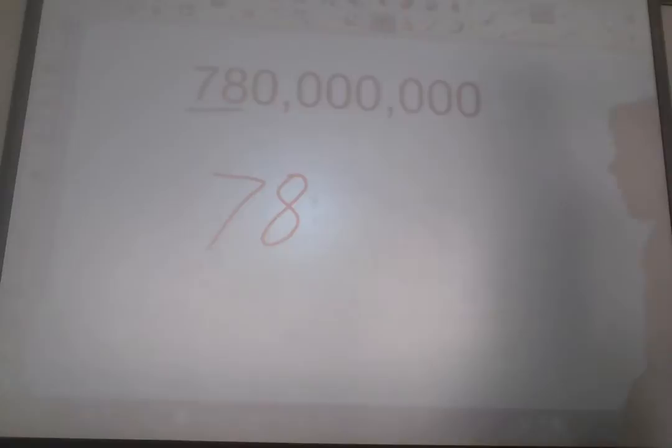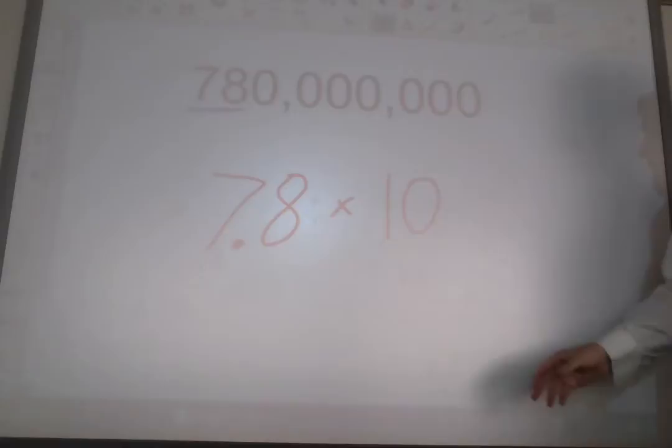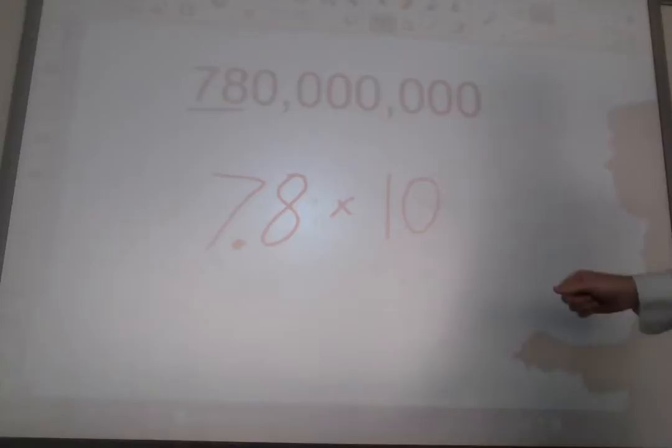But remember, I said this number has to be between 1 and 10. How do we do that? We go ahead and we put in a decimal right there. Now, instead of 78, we have 7.8. And that's between 1 and 10, so we're good to go. All right, then we write times 10. I told you the second number had to be an exponent with base 10. Well, here's our base 10. What exponent number goes here?